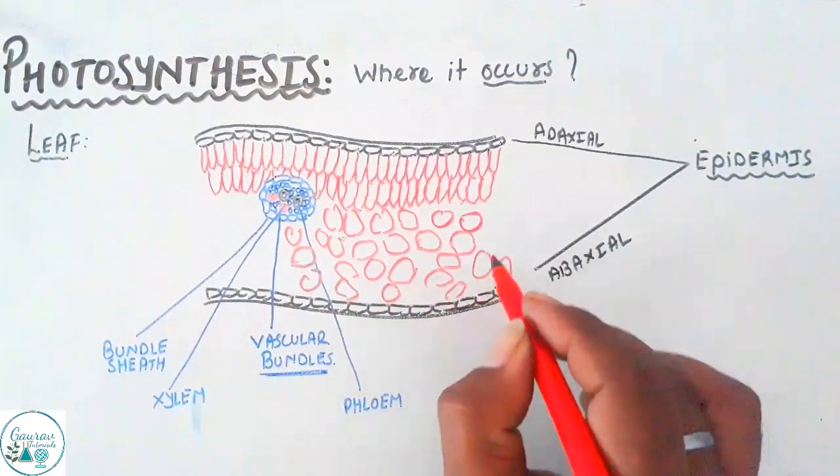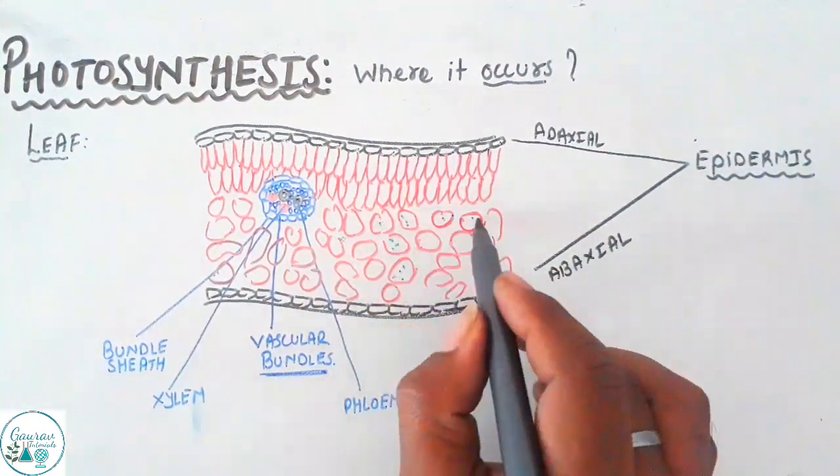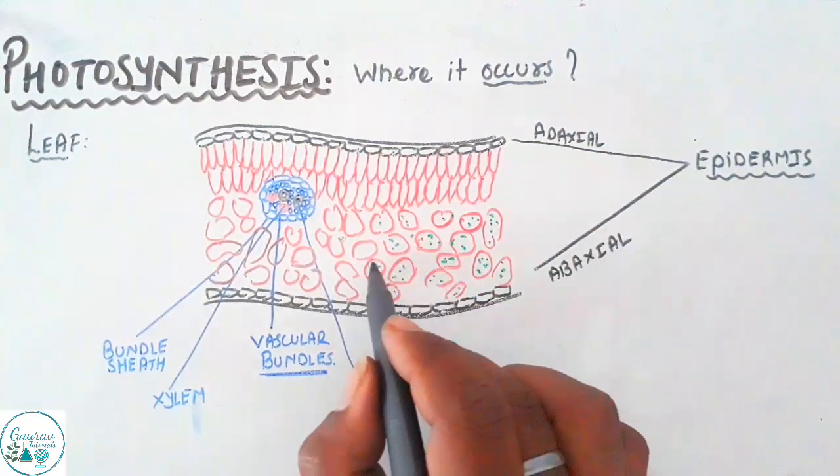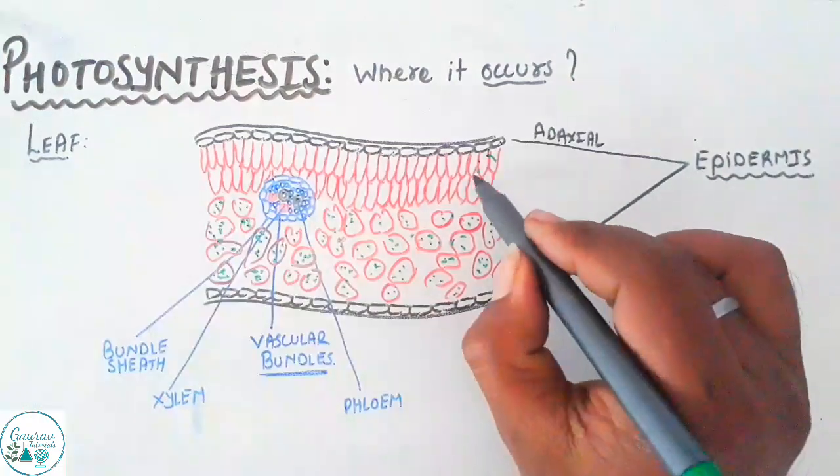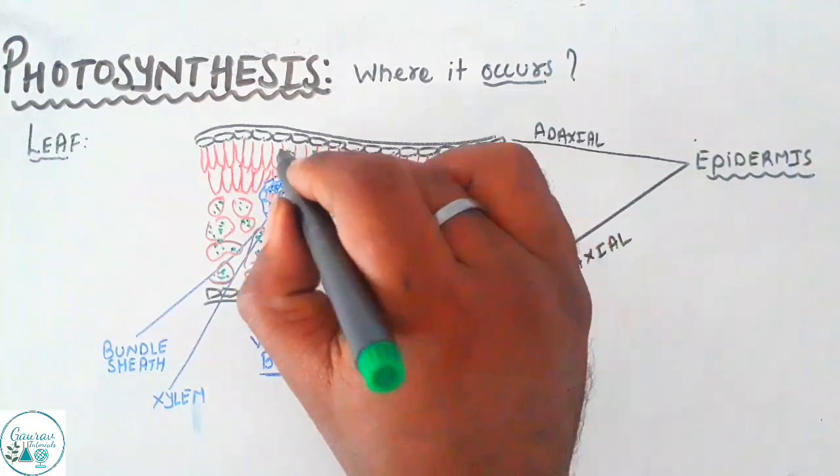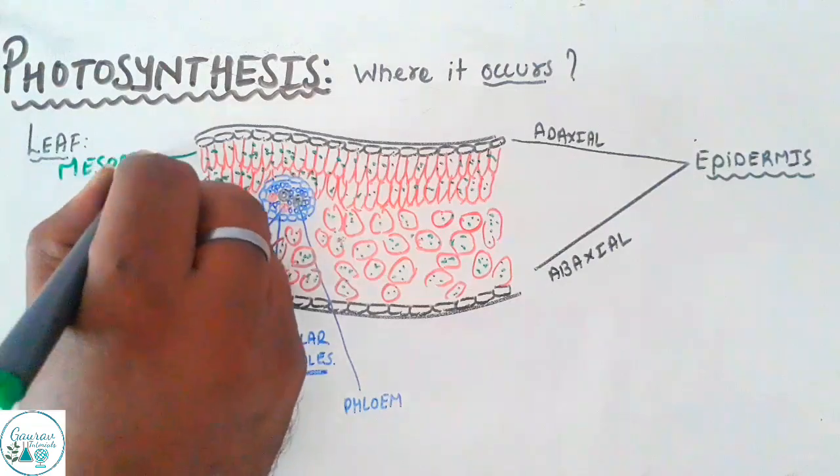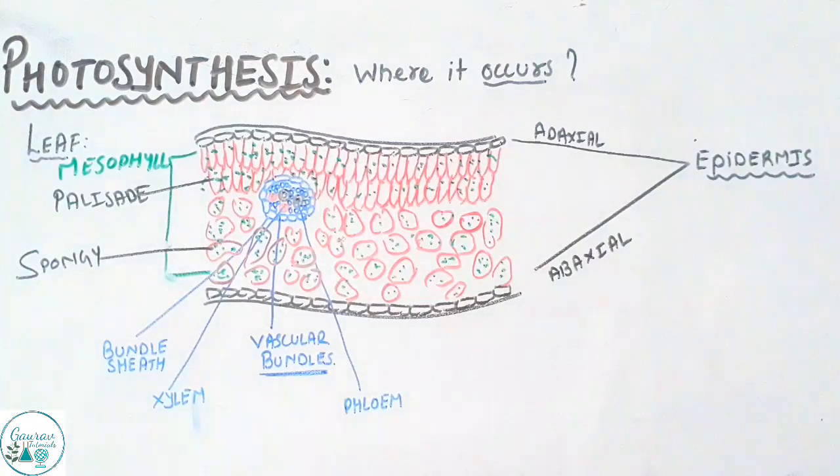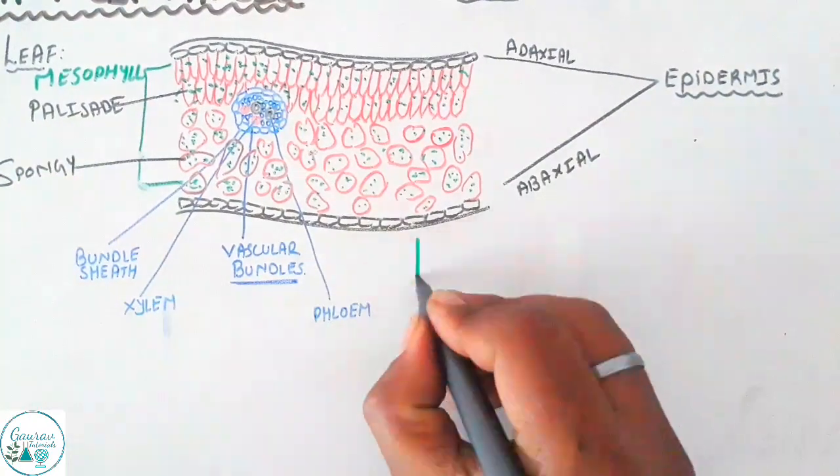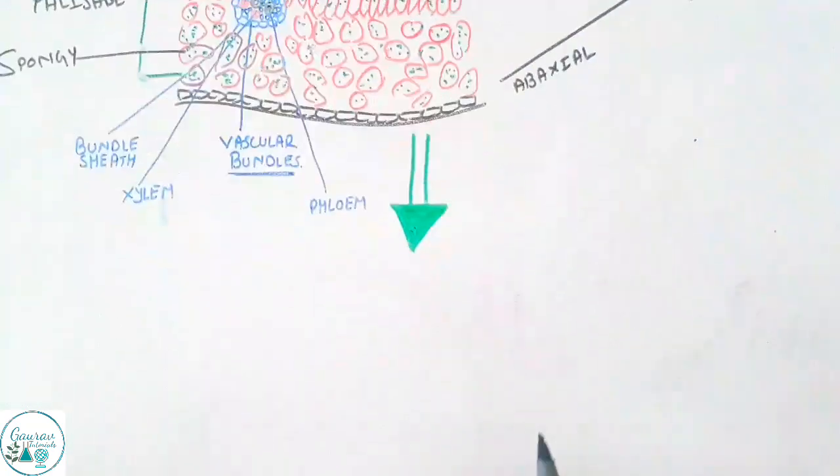Now these mesophyll cells are of two type. The one towards adaxial are arranged compactly which are parallel to one another, and the one towards the abaxial axis are having a lot of intercellular spaces between them and are arranged very irregularly. The one towards the adaxial is referred to as palisade parenchyma and the one towards the abaxial is referred to as spongy parenchyma.